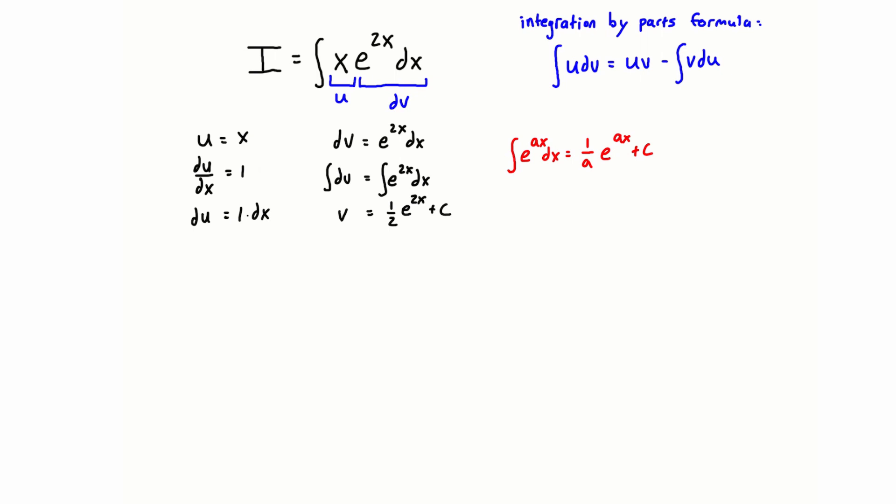So let's just double check now that we have all of the parts that we need for the integration by parts formula. So we have u and dv already defined as x and e to the 2x dx. We have another instance of u right there. We just found v here, so we've got v, we've got v in there, and we found du, so we have du. So we actually have everything we need to fill out this formula.